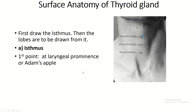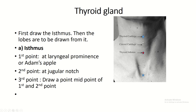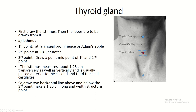Surface anatomy of the isthmus: first point, the laryngeal prominence; second point, the jugular notch; third point, the midpoint between the first and second points. The isthmus is 1.2 cm transversely as well as vertically, so draw two lines above and below the third point.